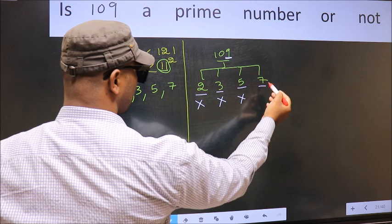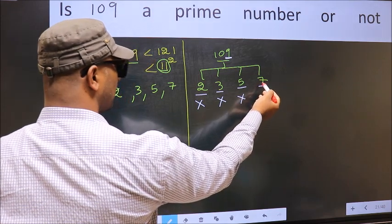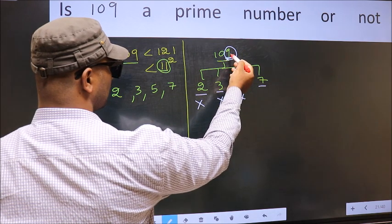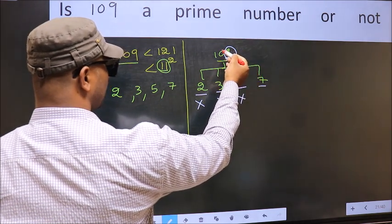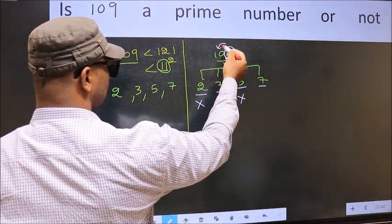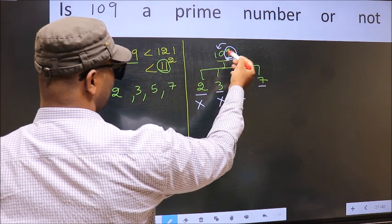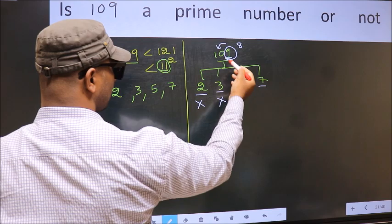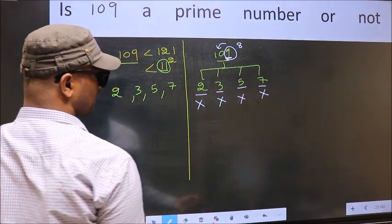Next number 7. To check divisibility by 7, you double this. 9 into 2, 18. 10 minus, subtract from this. 18 minus 10, you get 8. 8 is not divisible by 7, so this number also not divisible by 7.